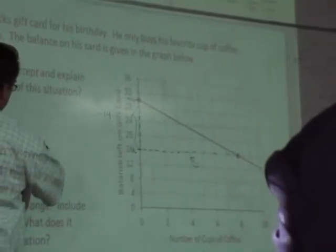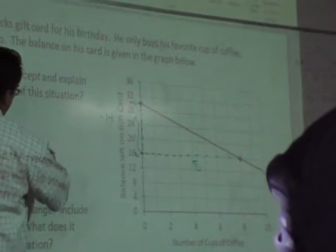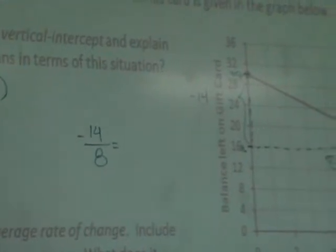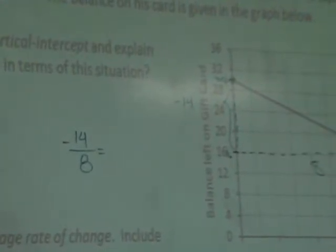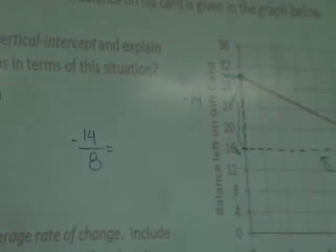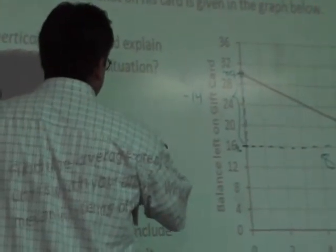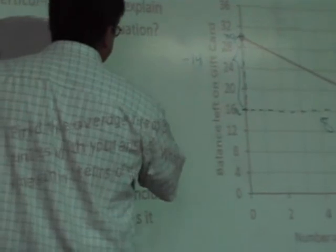Negative 14 over 8. Can someone divide 14 by 8? I think in this case it would make a little more sense if we just look at the decimal. What's 14 divided by 8? Negative 1.75. That's the slope.